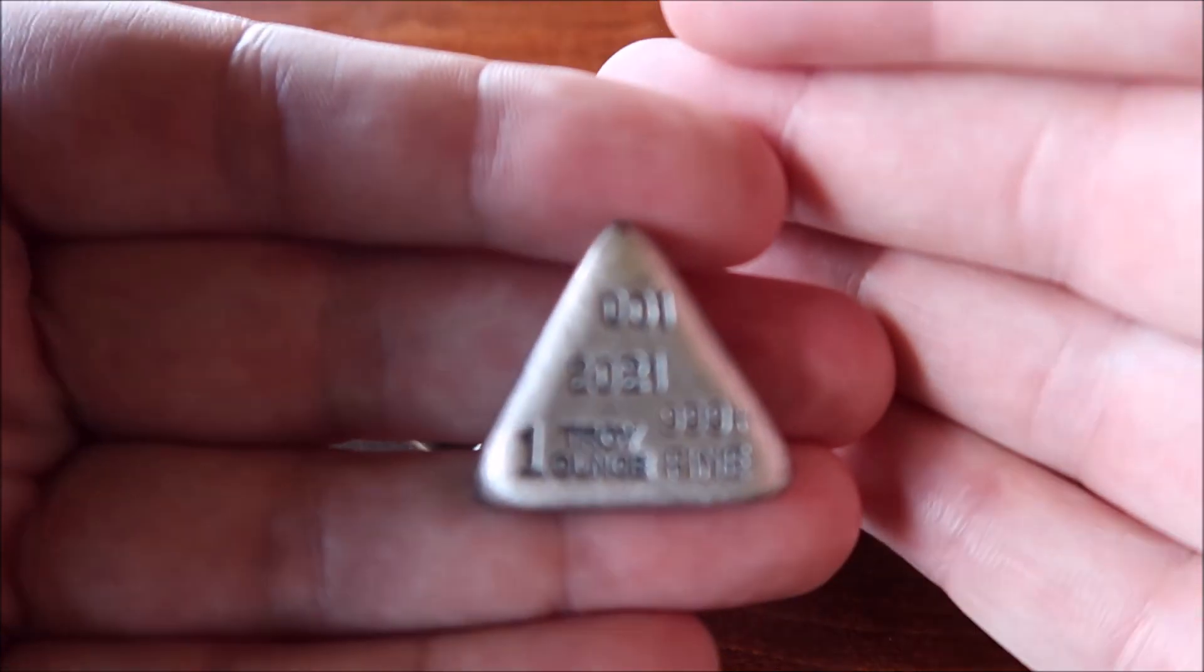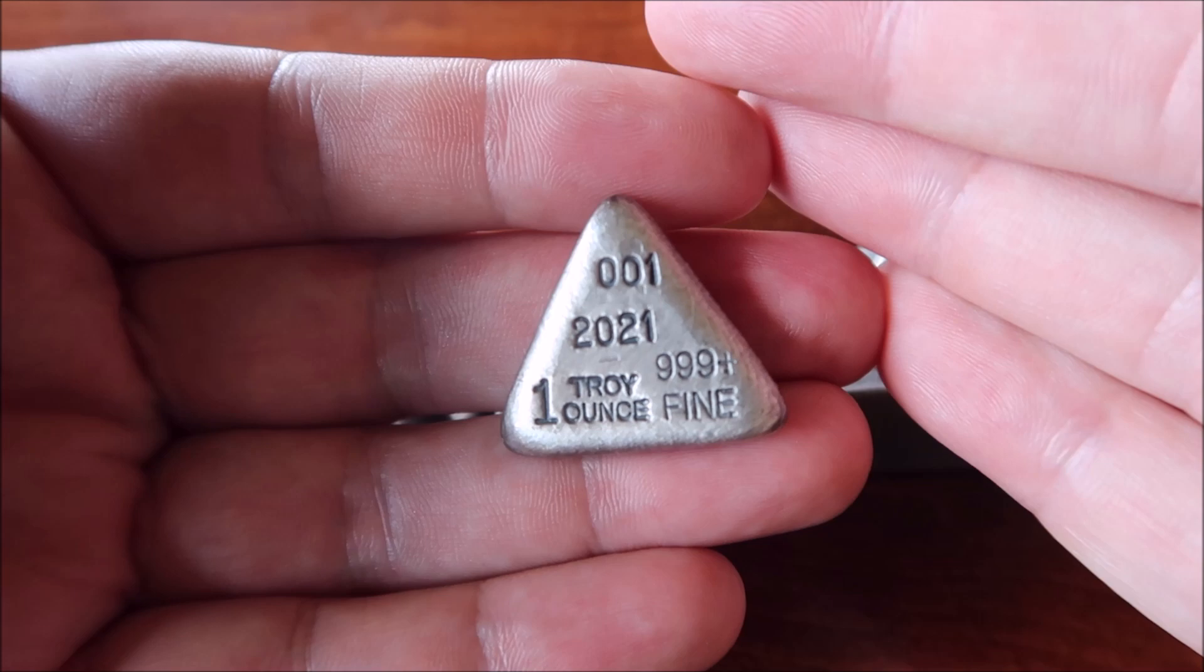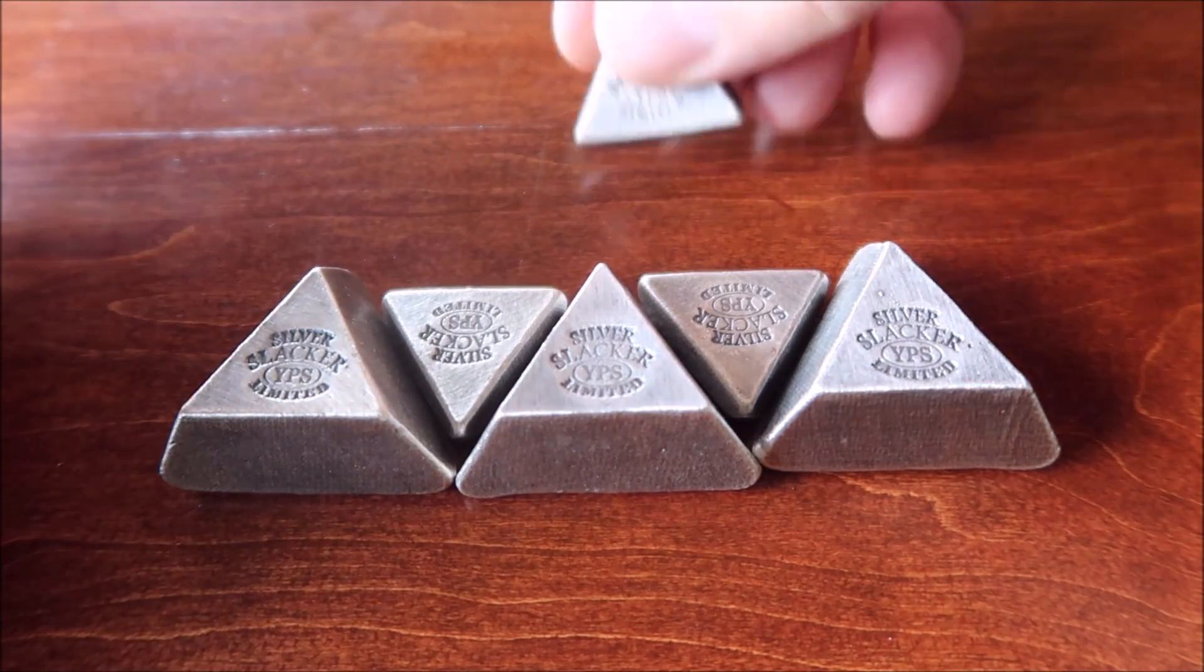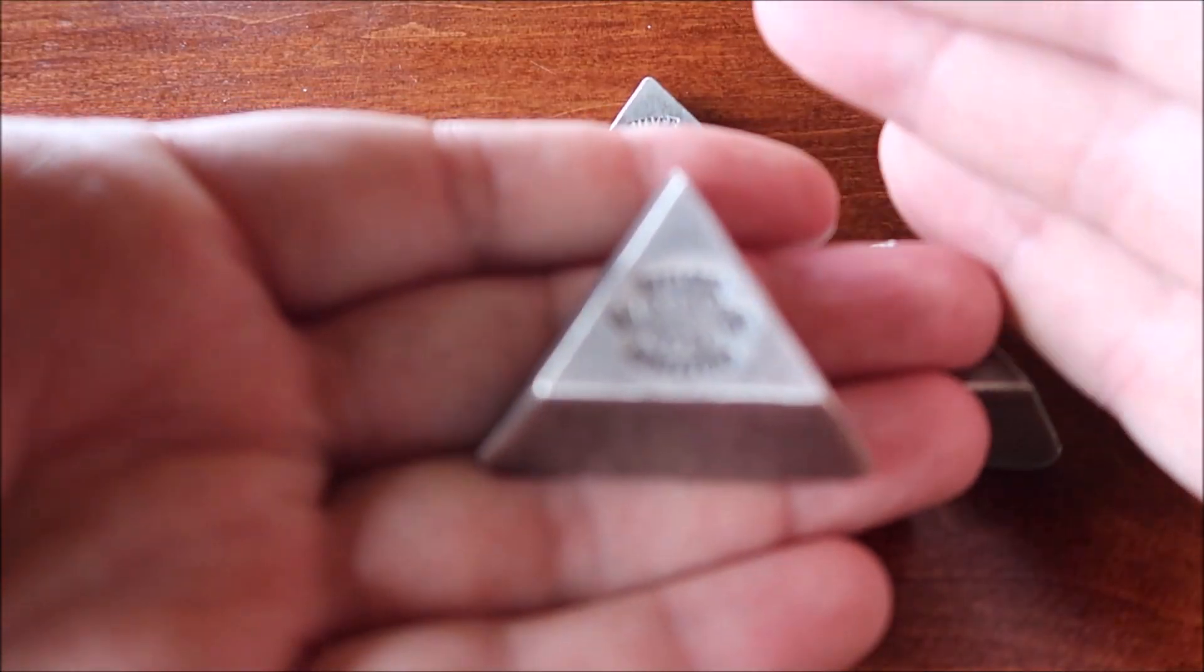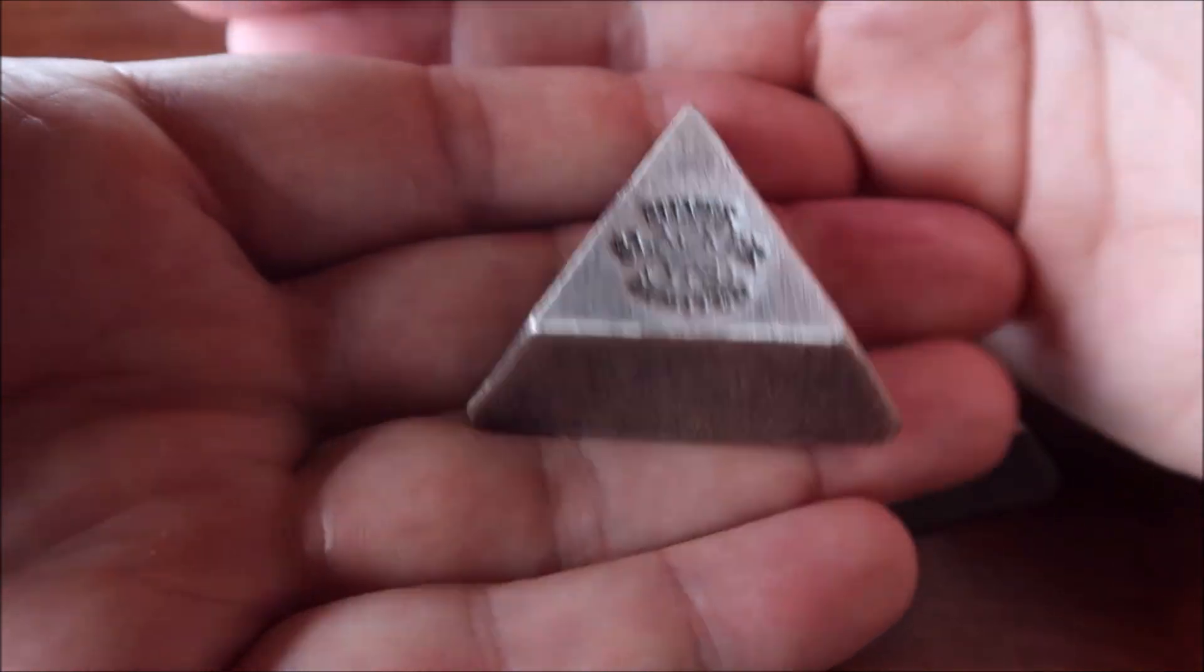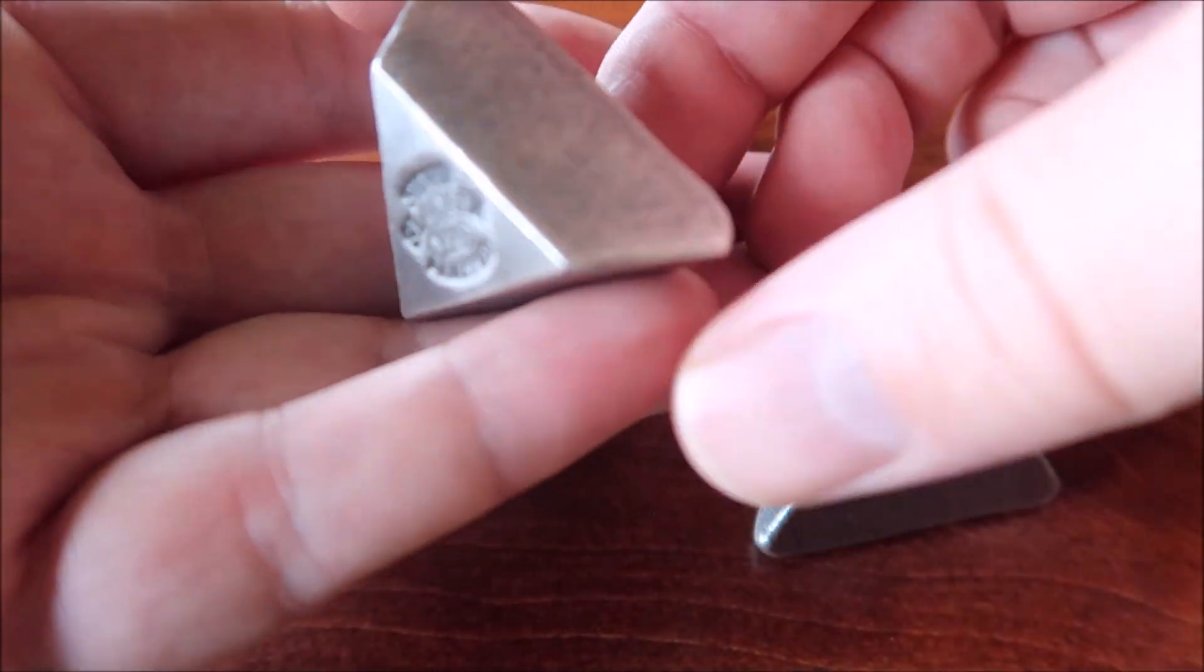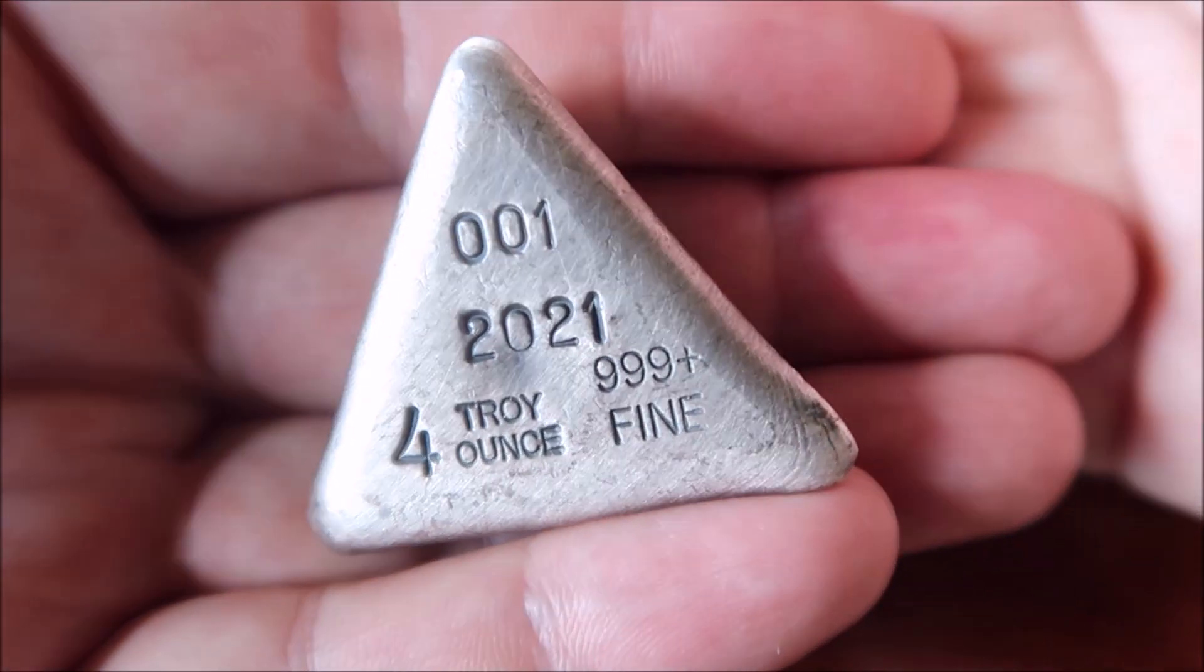It has the serial number, the year, the ounce, and the 995. So that's the one ounce, and here is the four ounce, which I think is the star of the show. This four ounce is so cool. It's a nice truncated pyramid.